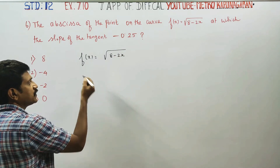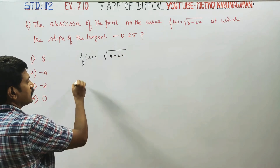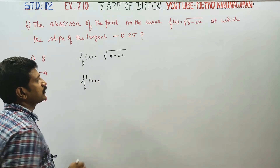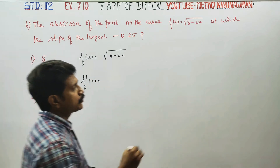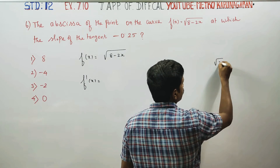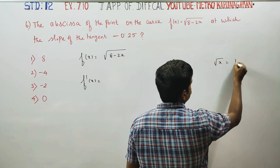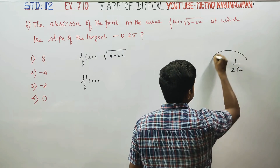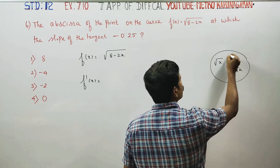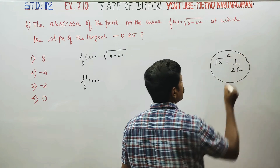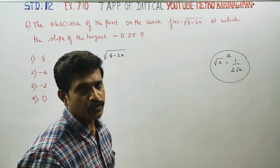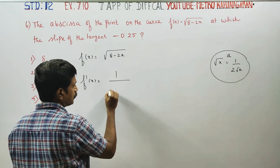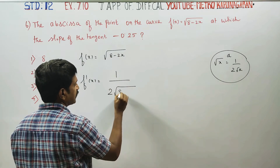Now we have to differentiate to find the slope. The concept is: if you have to differentiate root x, the result is 1 by 2 root x.